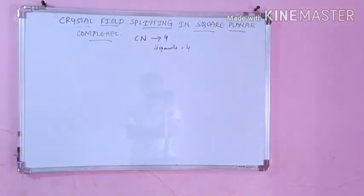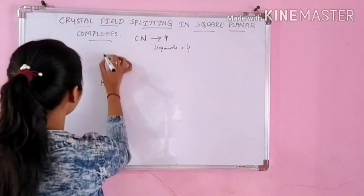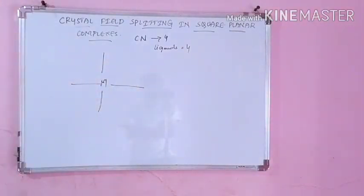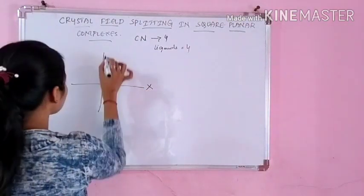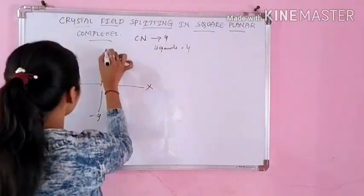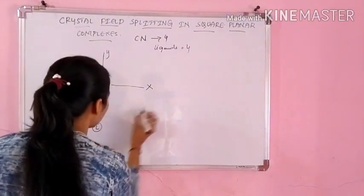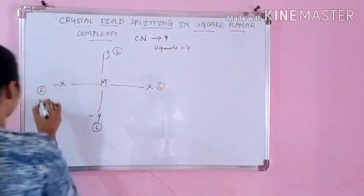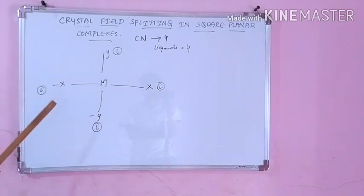How will they be approaching the metal? Think that 4 ligands are there around the metal. They will come along 4 axes. Which are those axes? You can take these as x, minus x, y, and minus y. All 4 ligands — I will show each ligand as L — all 4 ligands will be there. Coordination number means 4 ligands approaching in the x,y plane along the axes.